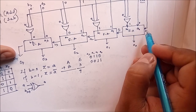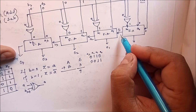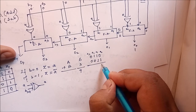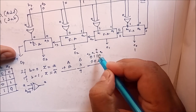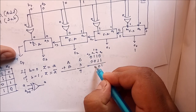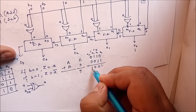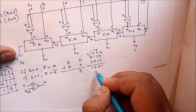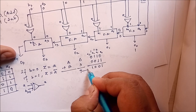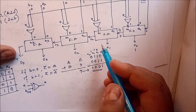So: 1 plus 0 plus 0 gives sum 1, carry 0. Then 0 plus 1 gives sum 1, carry 0. Then 1 plus 1 gives sum 0, carry 1. Then 1 plus 1 gives sum 0, carry 1. And 1 plus 1 plus 0 gives sum 1, carry 0. So the answer is 1, 0, 0, 1 — which is 9.